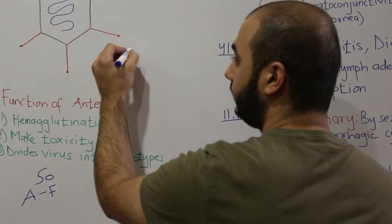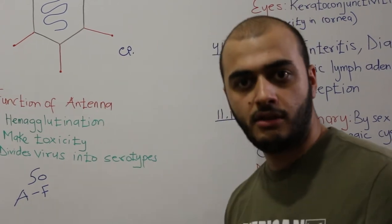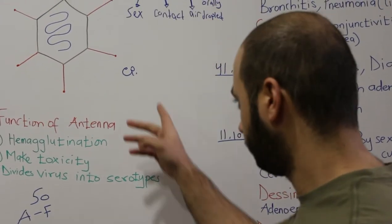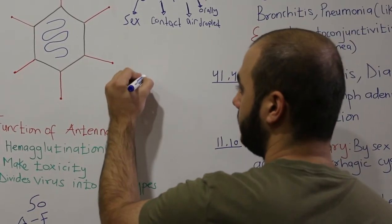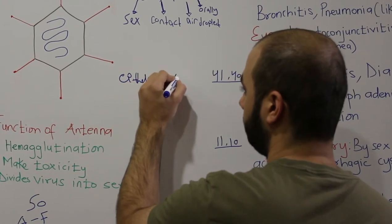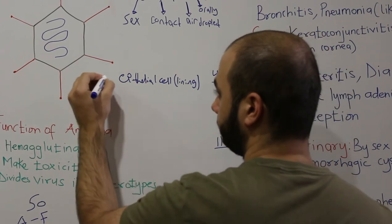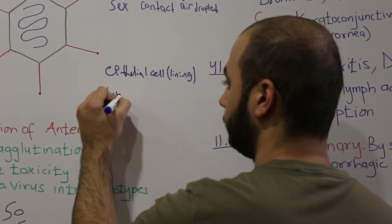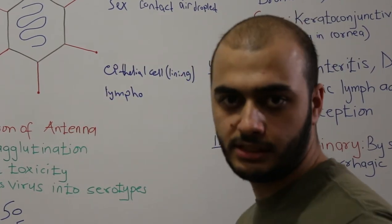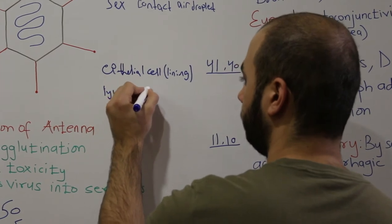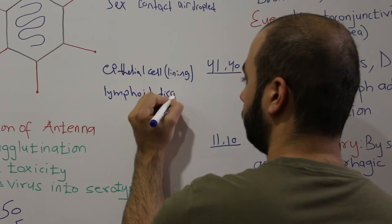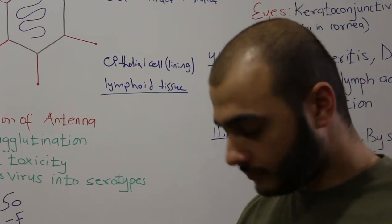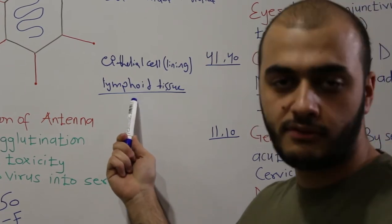The virus tends to infect epithelial cells — the epithelial lining. However, latency occurs in the lymphoid tissues, which is why this virus is called adenovirus, since 'adeno' means lymph. It has a tendency to spend its latent period in lymphoid tissues.